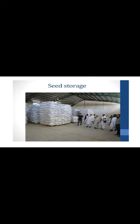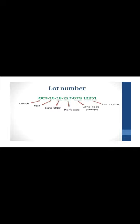This is the Seed Storage in godowns. Number of lots formed — seed lots, number of stacks built up to a height of 7 bags or up to 18 bags. This is the Lot Number generally mentioned: Lot Number, then Journal Code, then Plant Code, then State Code, then Year and Month.